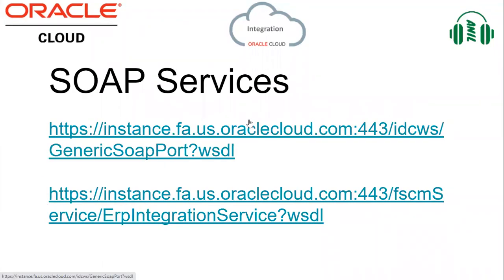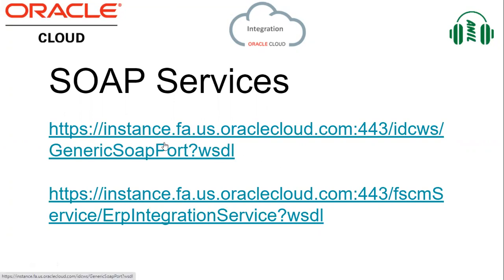For SOAP services, we have two options to download a file from UCM. One is the Generic SOAP Port and the other is the ERP Integration Service. When you want to try from your instance, you just need to update the host and port details. The remaining URL will be the same, and I will provide these service URLs in this video description.